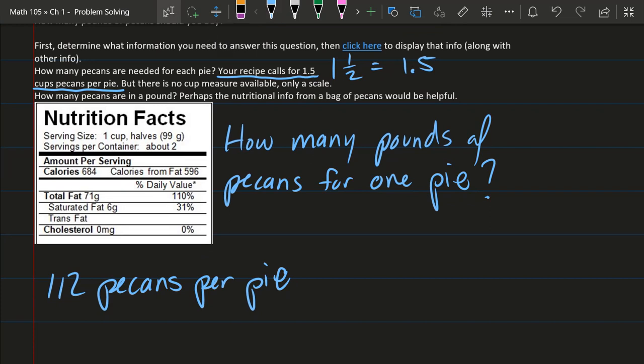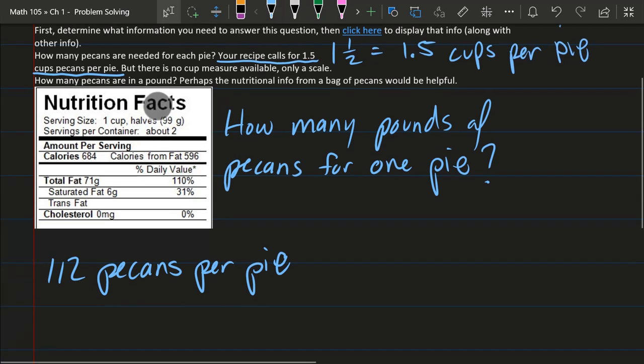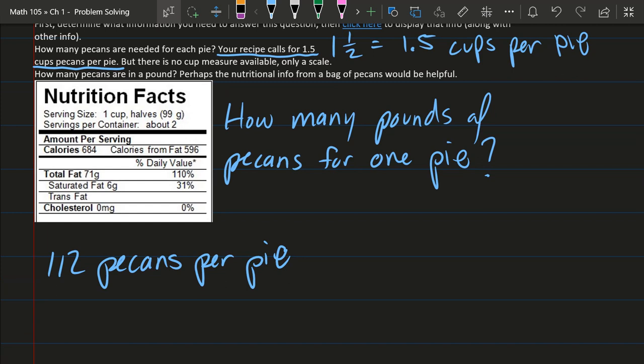So we're going to 1.5 cups per pie. So right now I know how many cups I need for each pie. It's 1.5. And I need to figure out how many pounds. So I need to go cups to pounds.